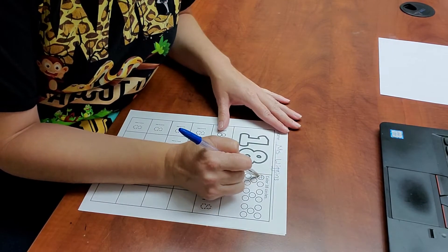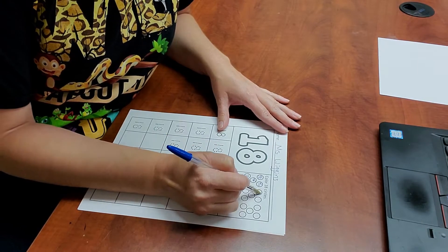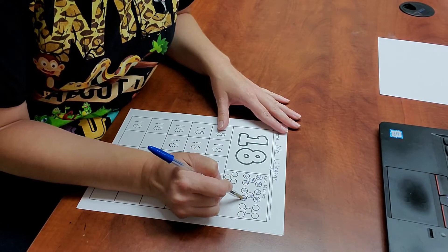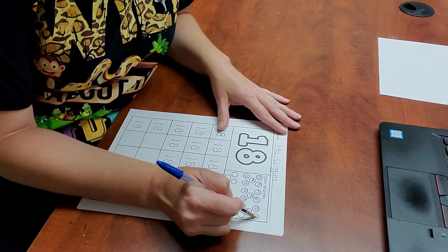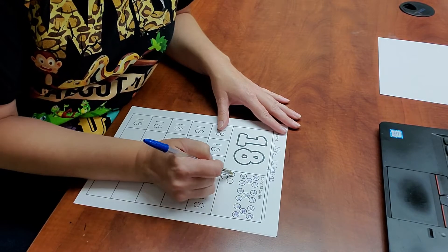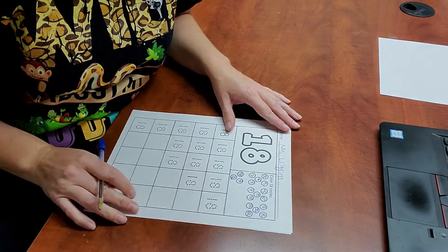Let's count to 18. 1, 2, 3, 4, 5, 6, 7, 8, 9, 10, 11, 12, 13, 14, 15, 16, 17, and 18.